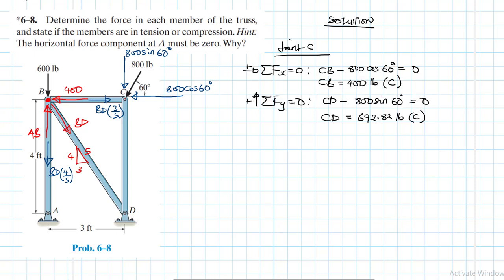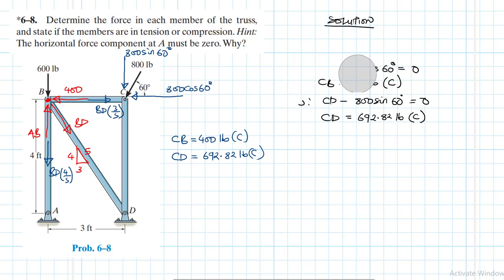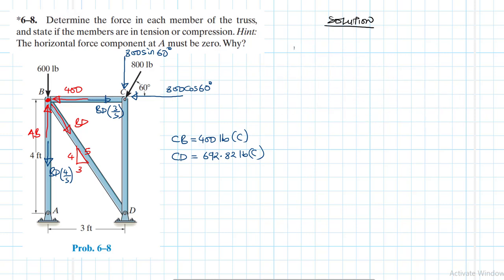To recap what we have so far: CB = 400 pounds in compression, and CD = 692.82 pounds in compression. Now proceeding with joint B.